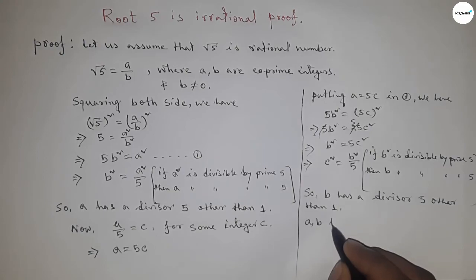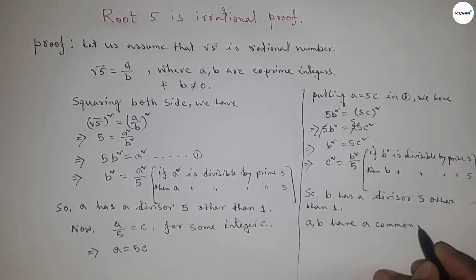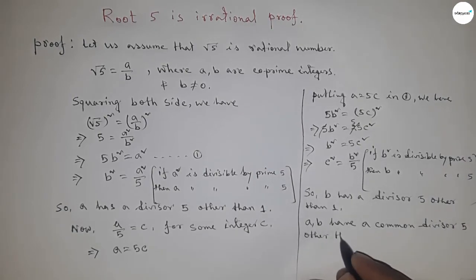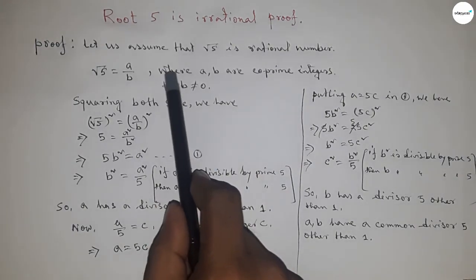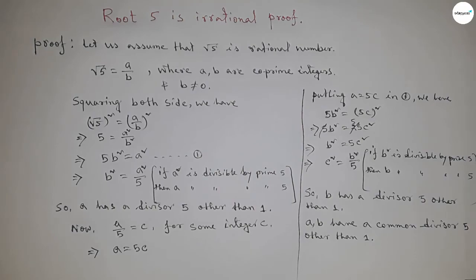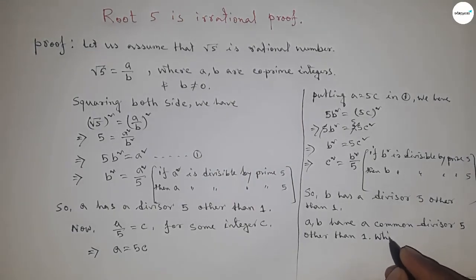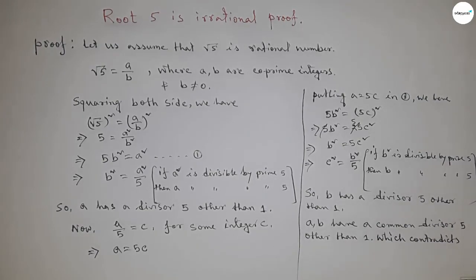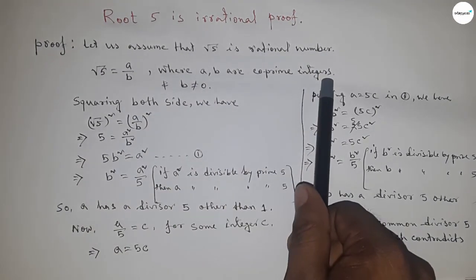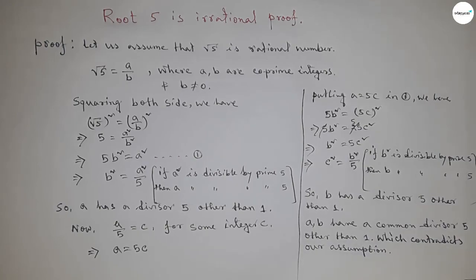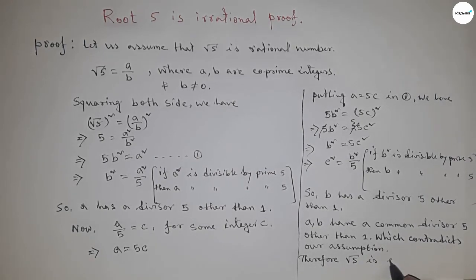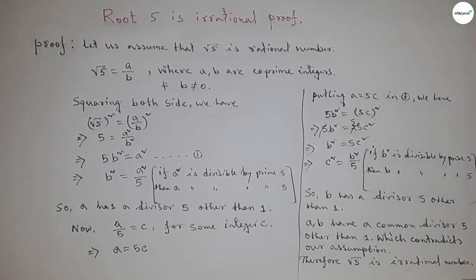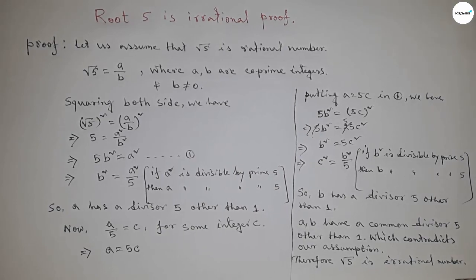So b also has a factor or divisor 5 other than 1. From this, we can say that a and b have a common divisor 5 other than 1. But we first assumed that a and b have only one common factor, which is 1. Here we got another common factor 5, which contradicts our assumption. Therefore, our assumption that √5 is a rational number is not correct, and so √5 is an irrational number. That's all — thanks for watching, please subscribe, like, and comment on my video.